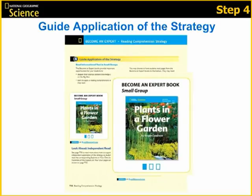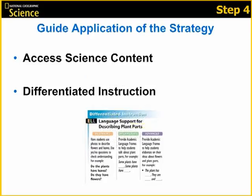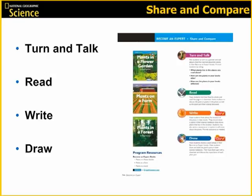These leveled books are carefully crafted with exceptional photography and design that you would expect from National Geographic, and they can also be used in the language arts block for science reinforcement. Your teacher's guide includes detailed instruction for each Become an Expert book, including accessing the science content, and differentiated instruction options are provided here as well. After students have read their Become an Expert books, they will share and compare what they learned with others in the class by turning and talking, reading, writing, and/or drawing. This is a great opportunity to have students use their science notebook and/or MyNG Connect Digital Library to find pictures or video clips to help them share more about their new area of expertise.